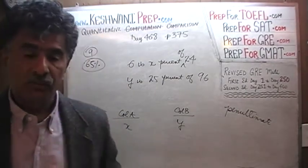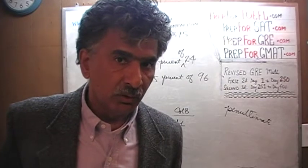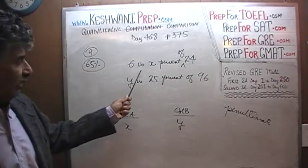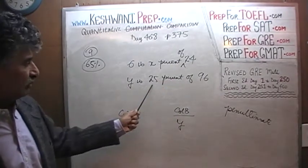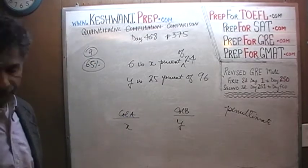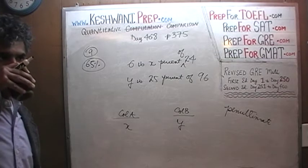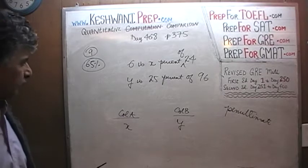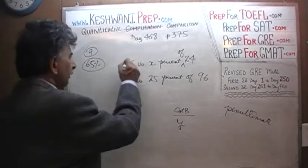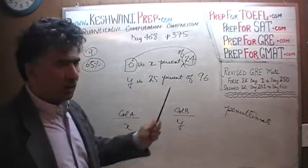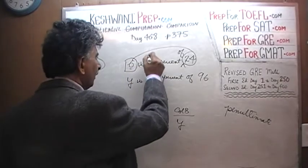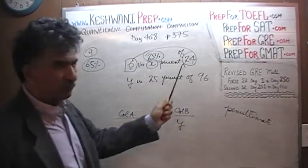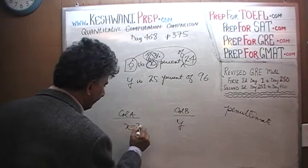I will give you 5 seconds to pause and unpause the video. I insist that you do the problem yourself and then compare your work against what we will do together. Here is what it says: 6 is x% of 24, and y is 25% of 96 — x versus y. We know that 6 is one quarter of 24, so 6 is 25% of 24, which means x here is 25.